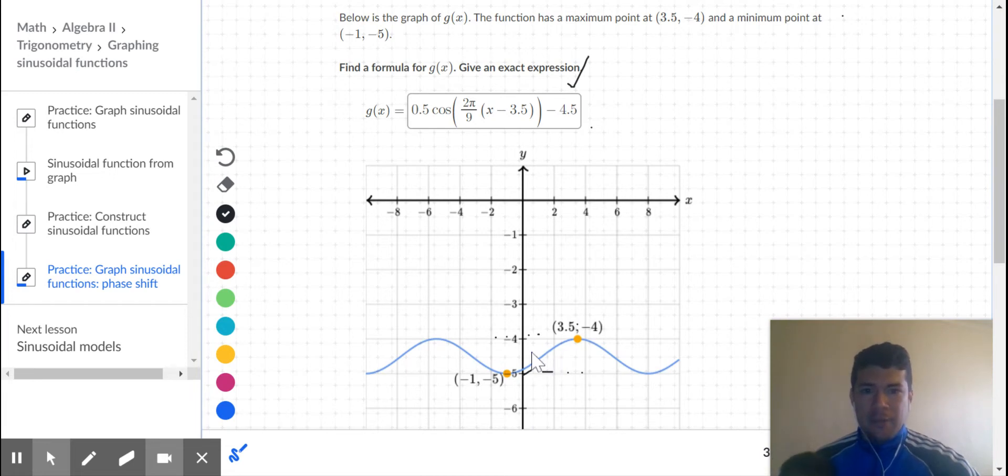Next, I find the amplitude. If my midline is negative 4.5, then my amplitude is the distance between the midline and the maximum, which is one half, or the distance between the midline and the minimum, which is also one half. So I got 0.5.